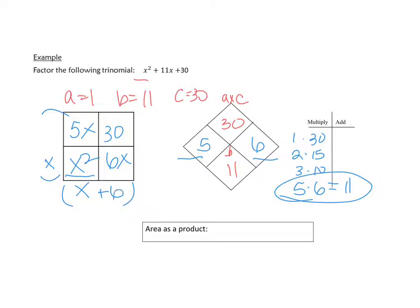Once I have one, it gets pretty easy. x times what equals 6x? Well, x times 6 equals 6x. And then x times what equals 5x? x times 5 equals 5x. So our area expressed as a product is x plus 5 times x plus 6.